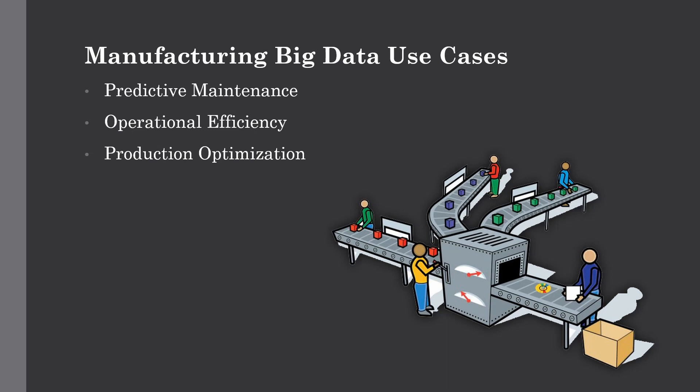The next one is operational efficiency. This is one of the areas where big data can have the most impact on profitability. With big data, you can analyze and assess production processes proactively, respond to customer feedback, and anticipate future demands.